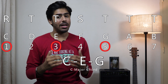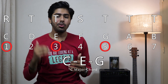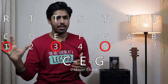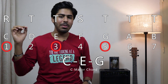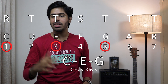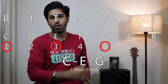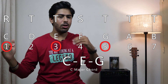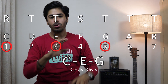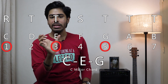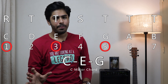So we can build any major chord starting from a particular note. Like, if I need a D major chord, I will write the D major scale using the same formula — tone, tone, semitone, tone, tone, tone — and then take the 1st, 3rd, and 5th notes. So 1, 3, 5 is the formula for the major chord.